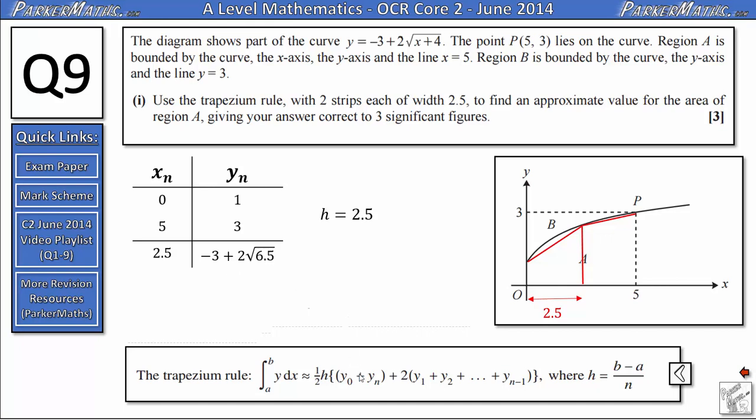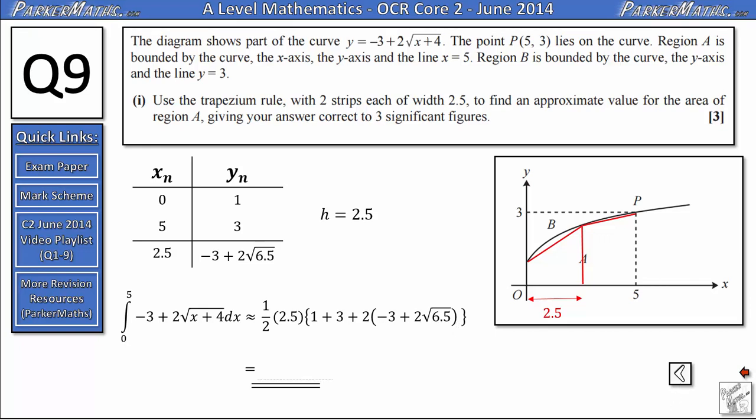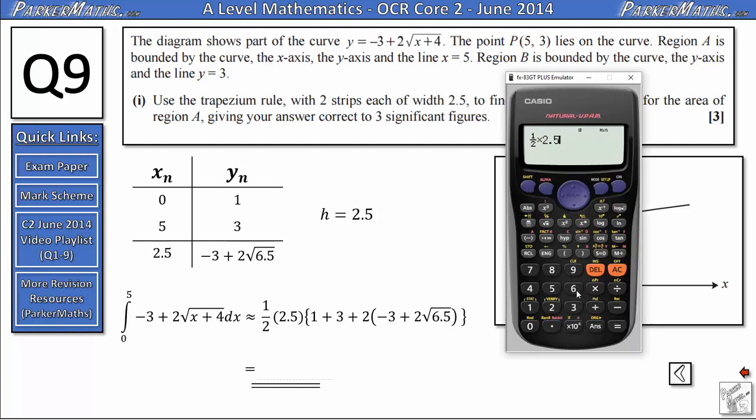Now that we've filled in this table, we're in a position where we can just substitute numbers into the formula down here. So to find an approximate value for the integral between 0 and 5 of minus 3 plus 2 root x plus 4, we're going to get a half h, which becomes a half multiplied by 2.5. Y naught plus y_n will be these two endpoints added together. So that's 1 plus 3. And we're going to get two lots of the middle y values. And in this case, there's only one middle y value, which is this here. So we get two lots of negative 3 plus 2 root 6.5. From here, all we need to do is put things into our calculator.